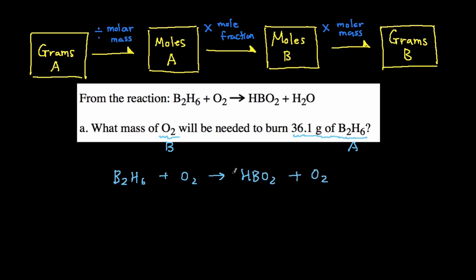So balancing it, we're going to need a two right here to balance the borons. And then we have H2O. We're going to need a two right here to balance the number of borons, and then we're going to need a two right here to balance the number of oxygens. And if you're having trouble balancing chemical equations, just take a look at my balancing chemical equation videos, and I go step by step in terms of how to do this.